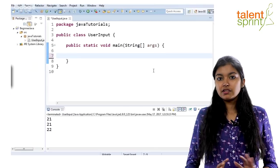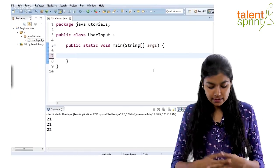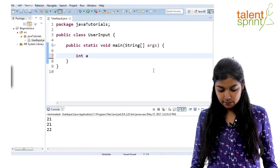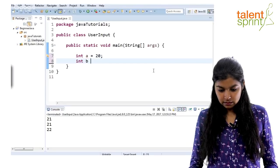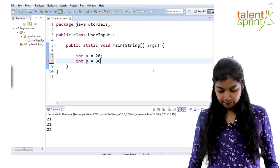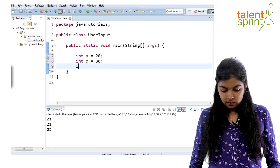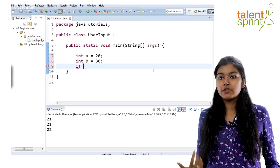Alright. So let's quickly see some of those operators. Let's say we have two variables, A equals 20 and B. Now, relational operators.